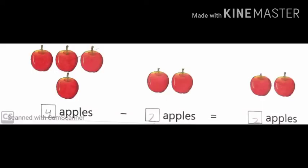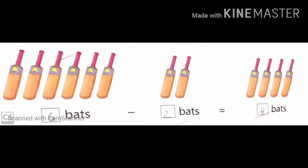See the third question. Four apples minus two apples. From these four apples, I will take away two apples — one, two. So how many apples are left with us? Two apples are left with us. Now the answer is two apples. See question number four. Six bats minus two bats. So we will take away two bats from six — one, two. So how many are left with us? One, two, three, four. Four bats. So the answer is four bats.